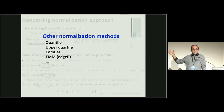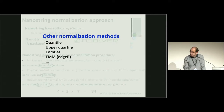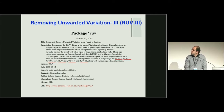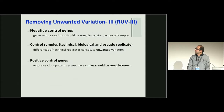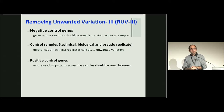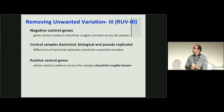That's why I used the RUV package - there are plenty of normalization methods there, and I used RUV3. For RUV3, we need negative control genes - genes which are not affected by your biological factor of interest. We also need control samples, technical replicate samples, biological replicates, and sometimes pseudo-replicates can be useful. And we need a positive control or known biology to check your normalization.